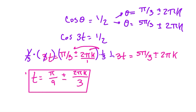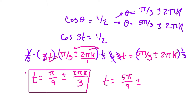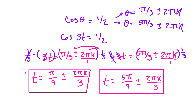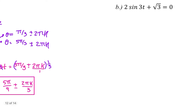Over here, same thing. We multiply by 1/3 to cancel out this 3, and we multiply that 1/3 to everything over here. So this cancels and I get t equals 1/3 times 5π/3, so 5π/9, and then plus or minus 2πk/3. So our second answer is t equals 5π/9 plus or minus 2πk/3.